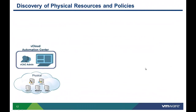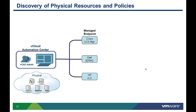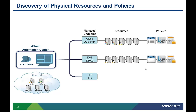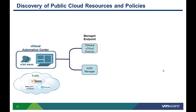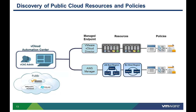Discovery and management of physical resources is similar to your virtual infrastructure. Automation Center manages through the physical server device manager, and after the management endpoint is defined, the physical resources including the machines that have already been provisioned and their respective policies are discovered. Discovering public cloud resources is very similar to discovering virtual or physical compute resources. You define the management endpoint, which in our example is either VMware vCloud Director or Amazon AWS manager. vCloud Automation Center then discovers the compute resources and policies associated with those managed endpoints.